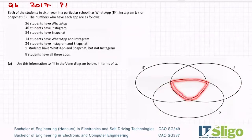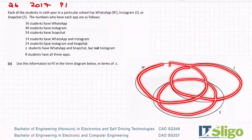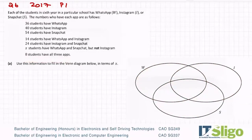How many have all three apps? That is the area where all three of these circles intersect, and it affects the whole Venn diagram. So always start with the center. Eight have all three apps, so that's the center done.